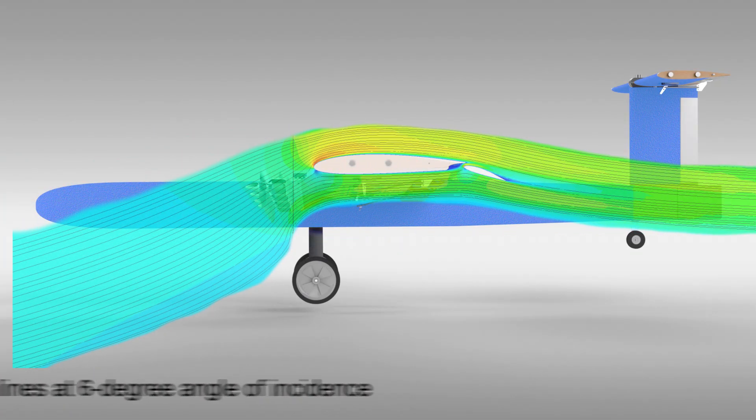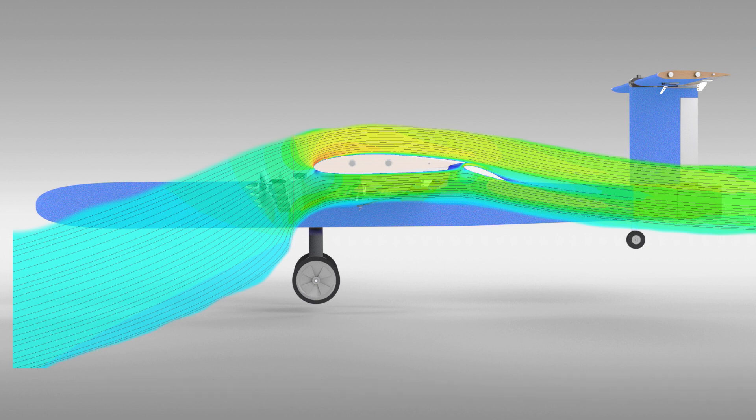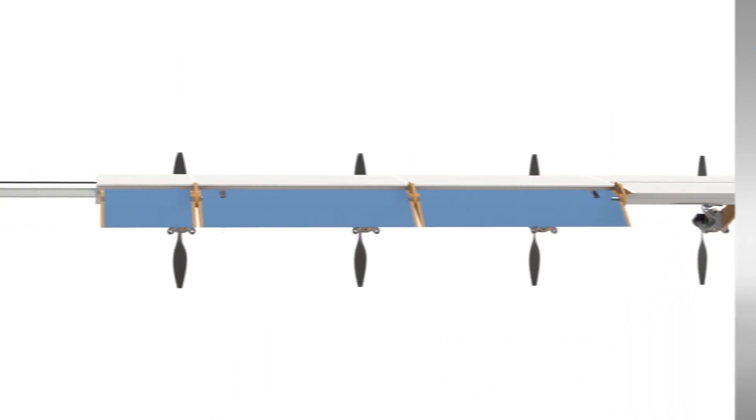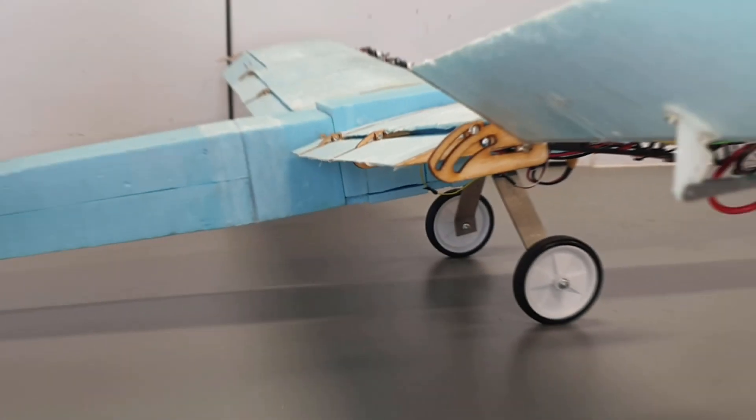To take advantage of the blown wing effect, flap design and prop placement is optimized for a trade-off between low speed performance and cruising efficiency. A fowler flap design is chosen to increase wing area and camber, extending along tracks.